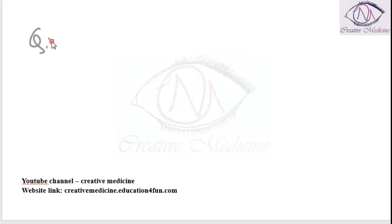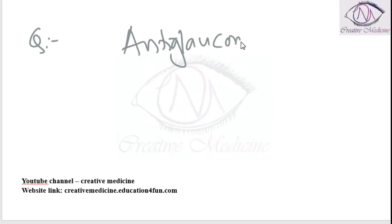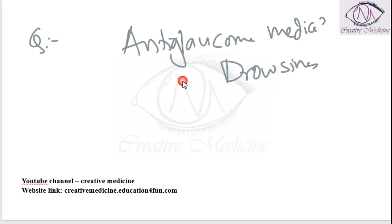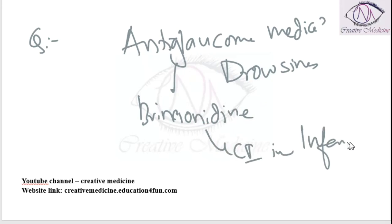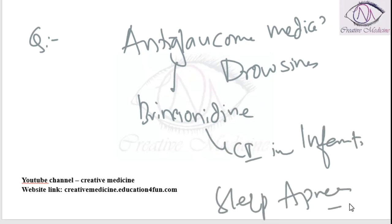Which of the following anti-glaucoma medications causes drowsiness? The anti-glaucoma medication causing drowsiness is brimonidine. Brimonidine causes drowsiness and as a result it is contraindicated in infants because it can result in sleep apnea in infants.